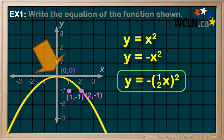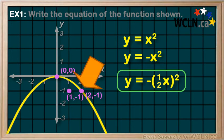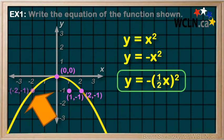So, let's confirm. When x is 0, y is still 0. When x is 2, y is negative 1. When x is negative 2, y is negative 1. And it all fits well.